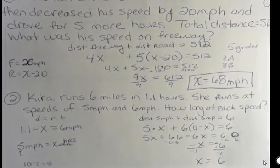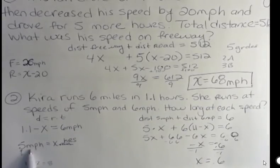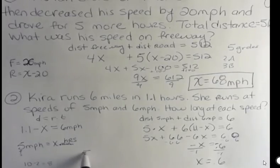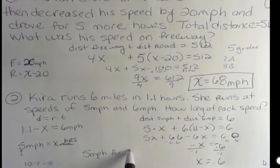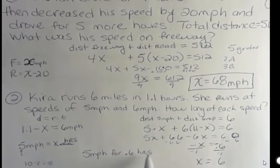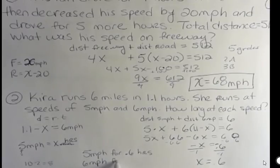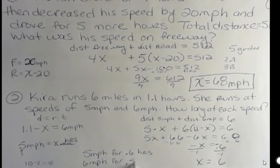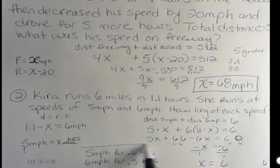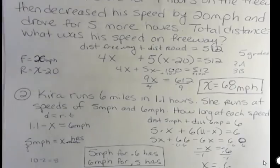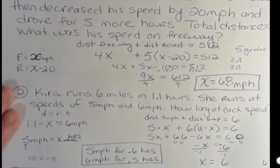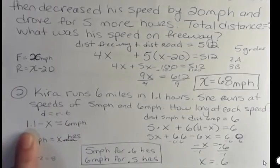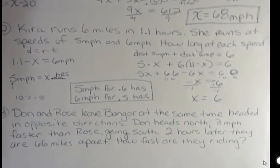So what that tells me is that we said X was going to be how long she was running at 5 miles per hour. So she ran at 5 miles per hour for 0.6 hours. How long did she run then at 6 miles per hour? Well, she ran 1.1 minus 0.6, which is 0.5. So she ran for half an hour at 6 miles per hour, and she ran for 0.6 hours at 5 miles per hour. And the real tricky thing here is that piece where you have to remember to do this. And we're going to keep doing it. You're going to get pretty good at remembering that, but it's going to be weird at first.